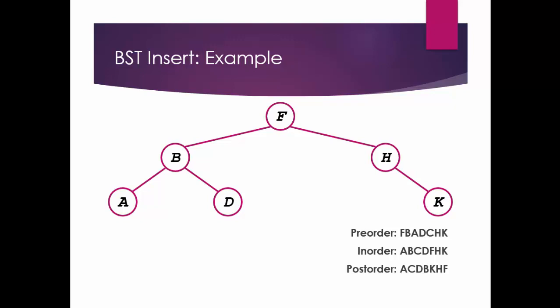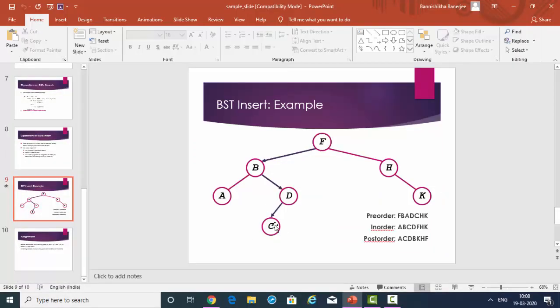In-order is left, root, right. First go to the left of f, which is b. Then left of b, which is a — write a first. Then write the root, which is b. Then write the right child, which is d. Now d has a left child c — here is where c appears. So write c first. After that write the root of this subtree, which is d. It doesn't have any right value, so ignore it. Come back to f. F has right child h. H doesn't have any left, so we write the root node directly. After that we write the right node. So the result is: a, b, c, d, f, h, k.